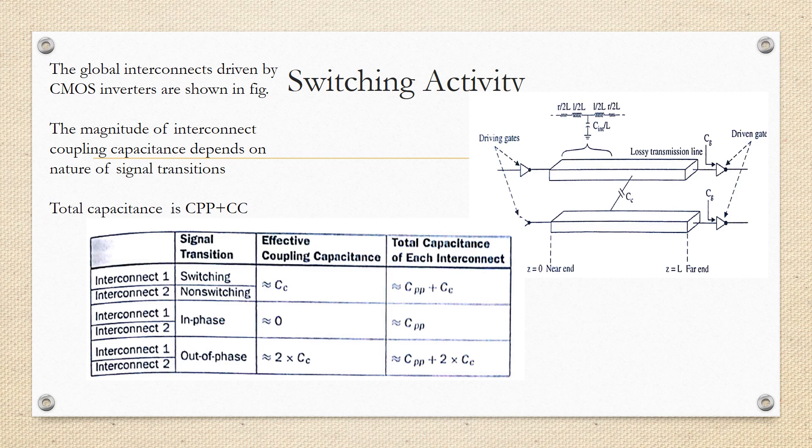See the figure and see the table. When interconnect one is switching and interconnect two is not switching, the effective coupling capacitance will be Cc, and total capacitance of each interconnect will become Cpp + Cc. When interconnect one and interconnect two are switching in phase, coupling will be zero and the interconnects are not affected by any crosstalk effect. This is the requirement—we should arrange such that two nearby interconnects are switching in phase, so at that time coupling noise will be zero. Third case: when interconnect one and interconnect two are switching out of phase, effective coupling capacitance will be maximum. Maximum noise or crosstalk will be there, that is 2Cc. So total capacitance to the interconnect becomes Cpp + 2Cc. This is the worst case scenario when both are switching out of phase.